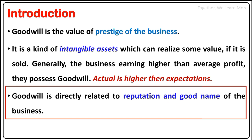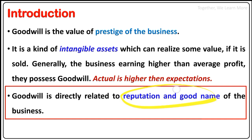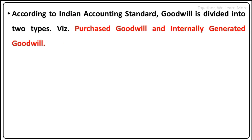Goodwill is directly related to the reputation and good name of the business. According to Indian Accounting Standard, Goodwill is divided into two types: one is Purchased Goodwill, and another one is Internally Generated Goodwill.